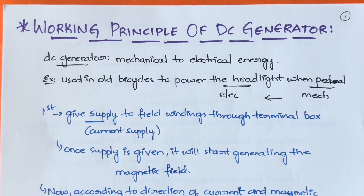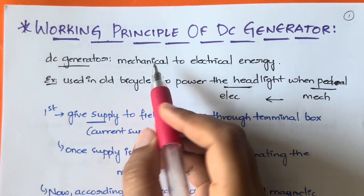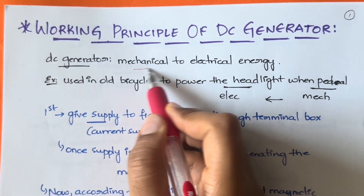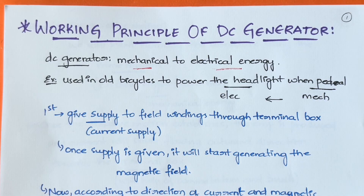Let's quickly revise what a DC generator is. DC generator means mechanical energy will be converted into electrical energy — you convert the physical energy into electrical energy.